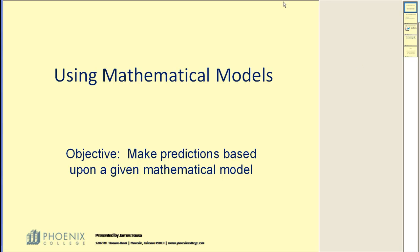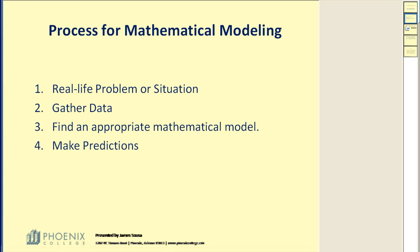Let's take a look at how this process normally works. Normally what happens is you have a real-life problem or situation, and then from that problem or situation you're able to gather a bunch of data. Then from that data you use mathematics to find a mathematical model that resembles that data. Once you have the mathematical model, you're able to make predictions about the future.